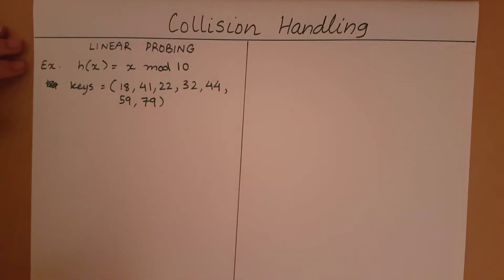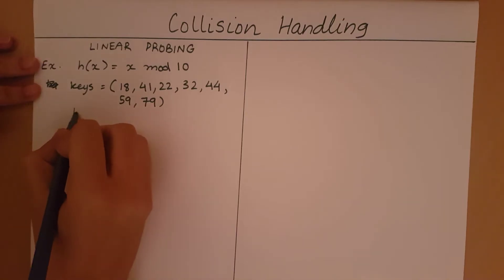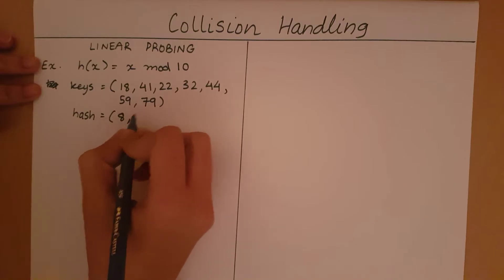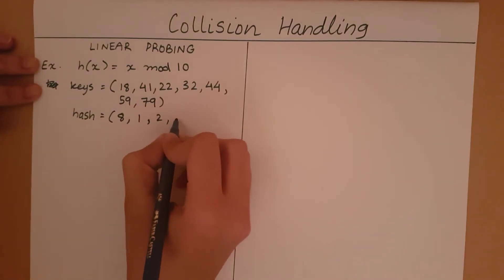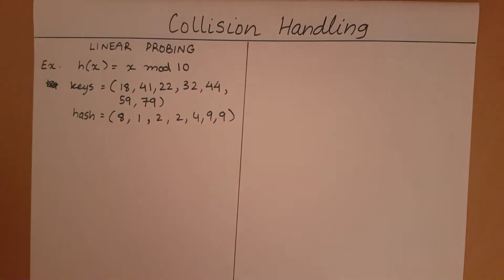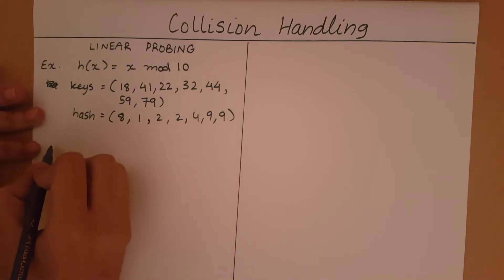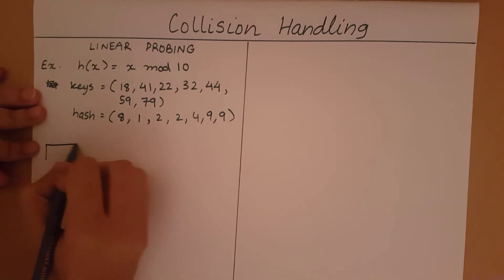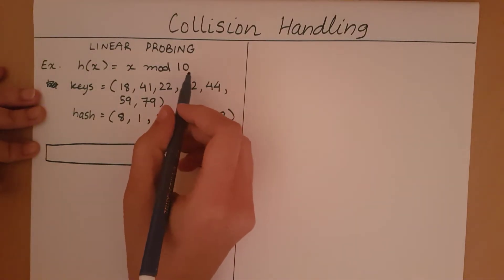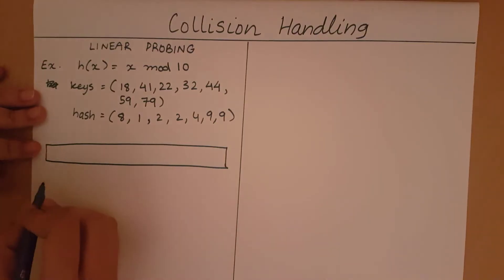If these are my keys, what are my hash values? The hash value of 18 is 8, 41 is 1, 22 is 2, 32 is 2, 44 is 4, 59 is 9, and 79 is 9 respectively. My N is going to be 10, because that is the range in which I am compressing. So my bucket array will have indexes 0 to 9.